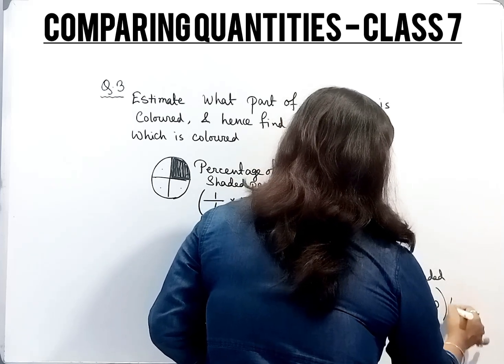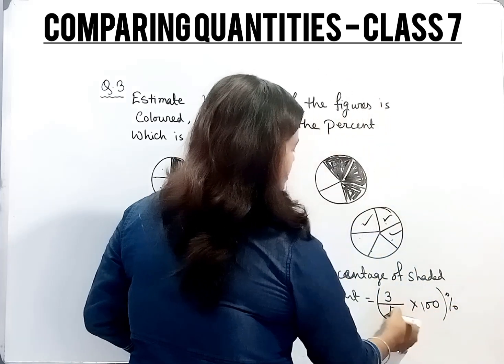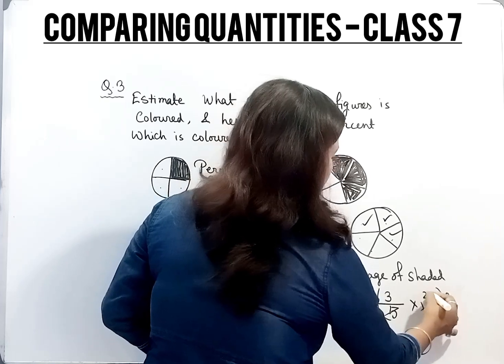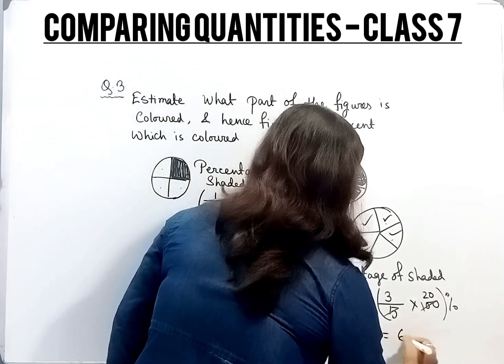So 3 by 5. Now multiply it by 100 and put the percentage sign. Now reduce it by 5, we get 20. So 3 into 20 is 60. 60 percent.